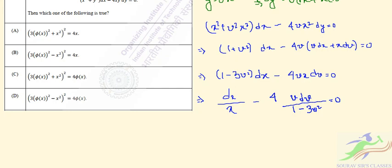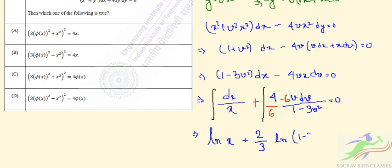Before integrating, notice that in the denominator we have 1 minus 3v squared. If we do the first derivative of 1 minus 3v squared, it will be minus 6v. So we can put just 6 in the numerator and compensate with minus 6, to make this integrable. Now integrating both sides, what we get is: ln x plus two-thirds ln(1 minus 3v squared) equal to the integration constant, which we write as one-third ln c.